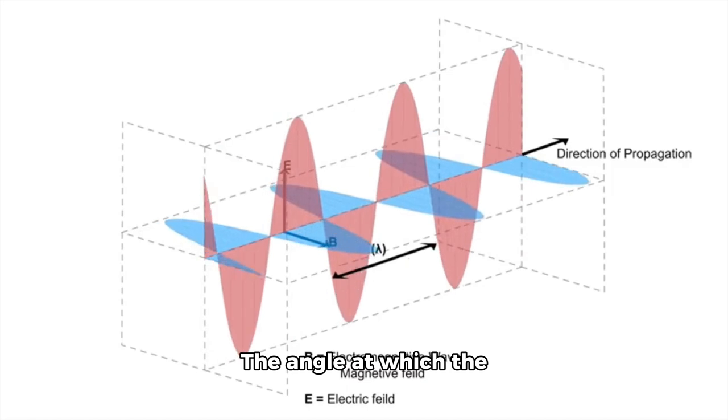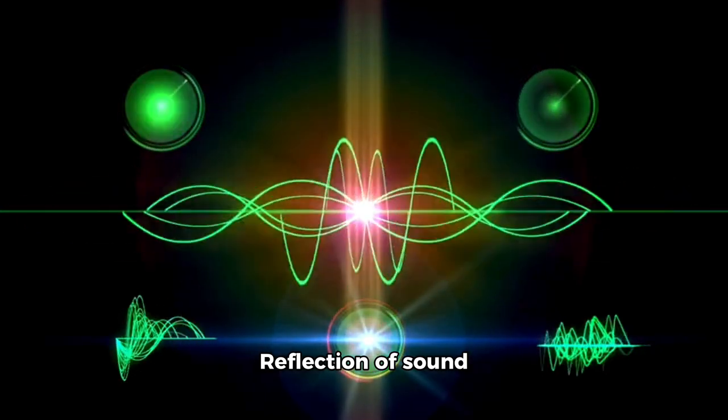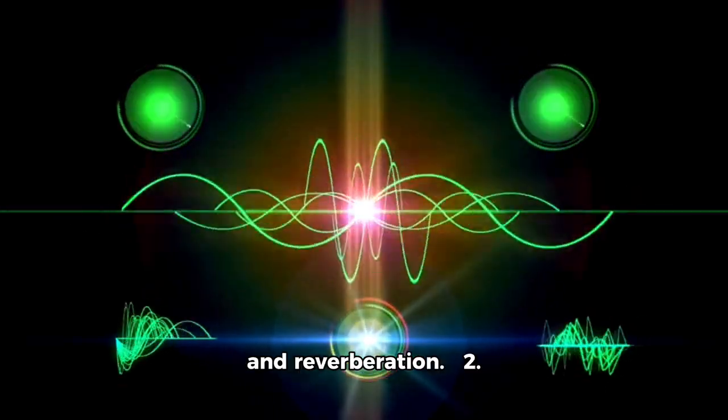The angle at which the sound waves reflect depends on the angle at which they hit the surface. This behavior is similar to how light reflects off a mirror. Reflection of sound waves can result in phenomena such as echo and reverberation.